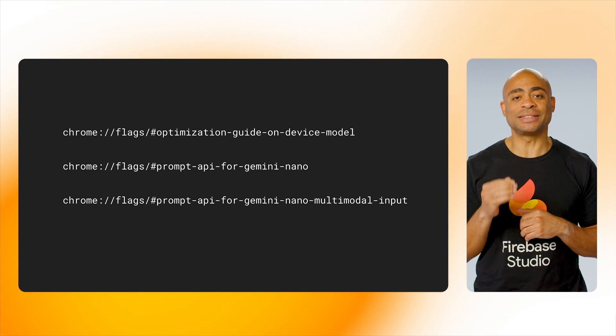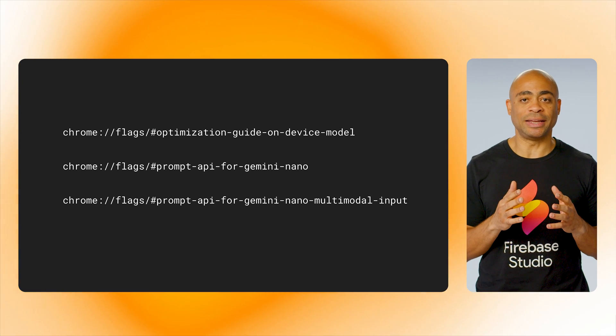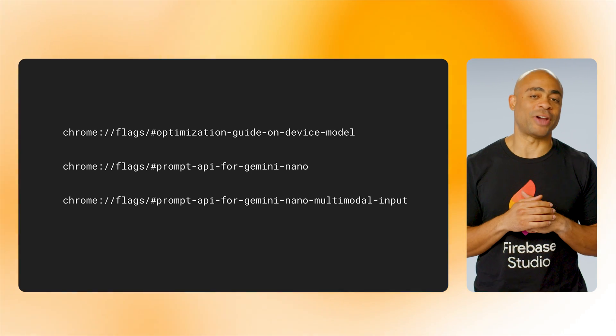Let's get started setting up your machine for on-device AI inference. You'll need to flip a few flags in Chrome for your app so that you can test locally with the local model provided by Google. If you want to push this out to your users, then you need to register for the Origin trial. I'll leave a link in the description below. With the Chrome flag set, you're ready to get started adding hybrid AI features to your app.